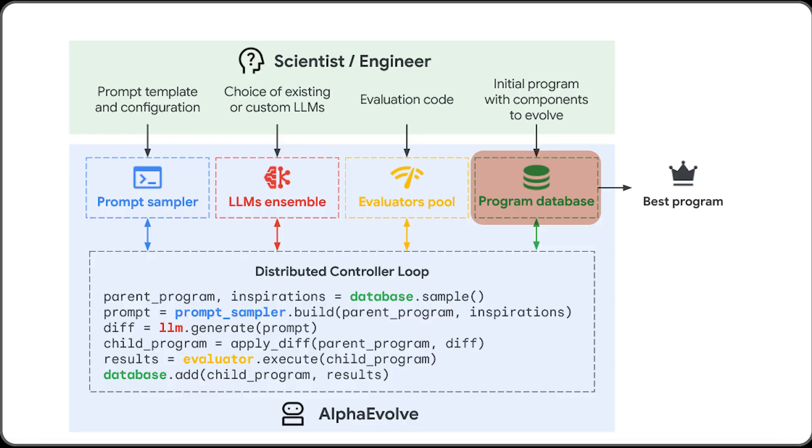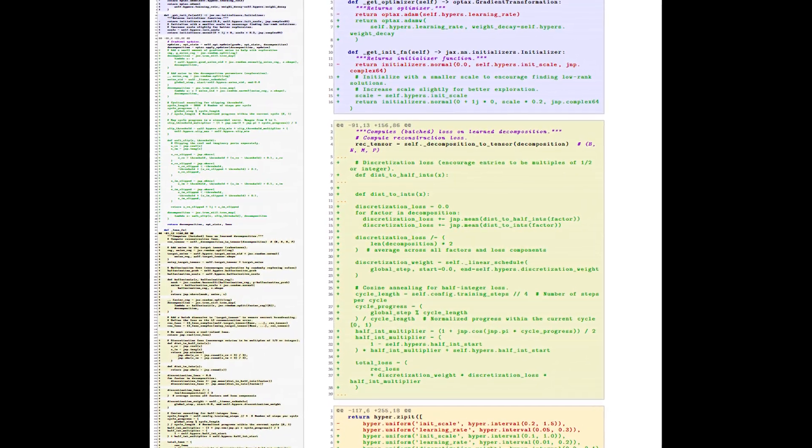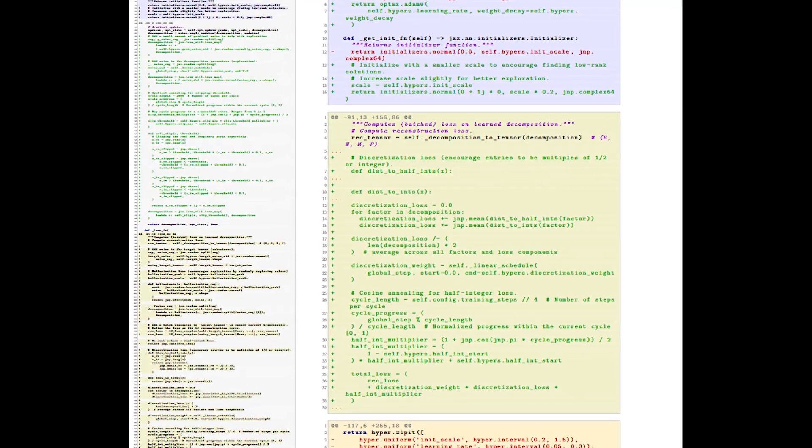And finally, the program database is the code base that the AI is working on and improving over time. The researchers can manually highlight what parts of the code might need improvements or the AI can decide by itself.